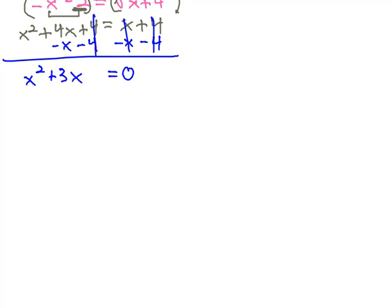And then, once we have it equal to 0, we factor it. And we always start factoring by factoring out the greatest common factor of x. It leaves us with x plus 3 equals 0.